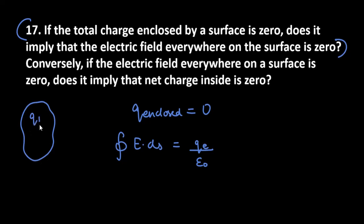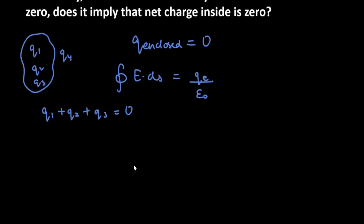Let's say that we have a Gaussian surface. It has three charges q₁, q₂, and q₃, and they have told us that the enclosed charge is zero, so that q₁ + q₂ + q₃ equals zero.